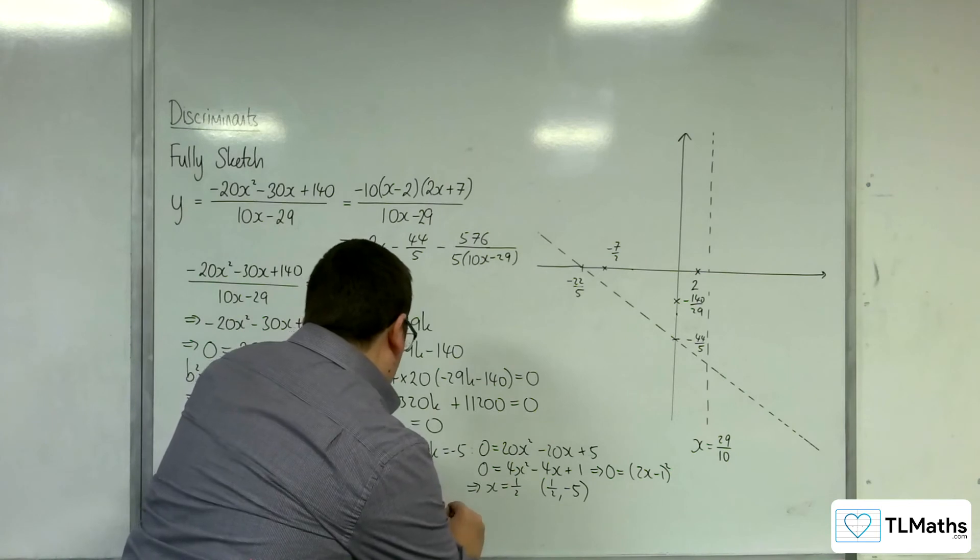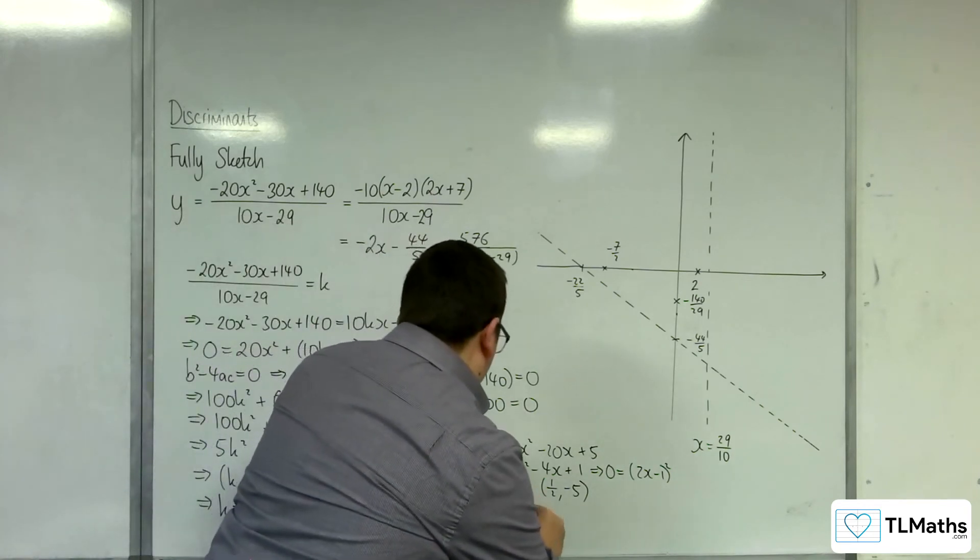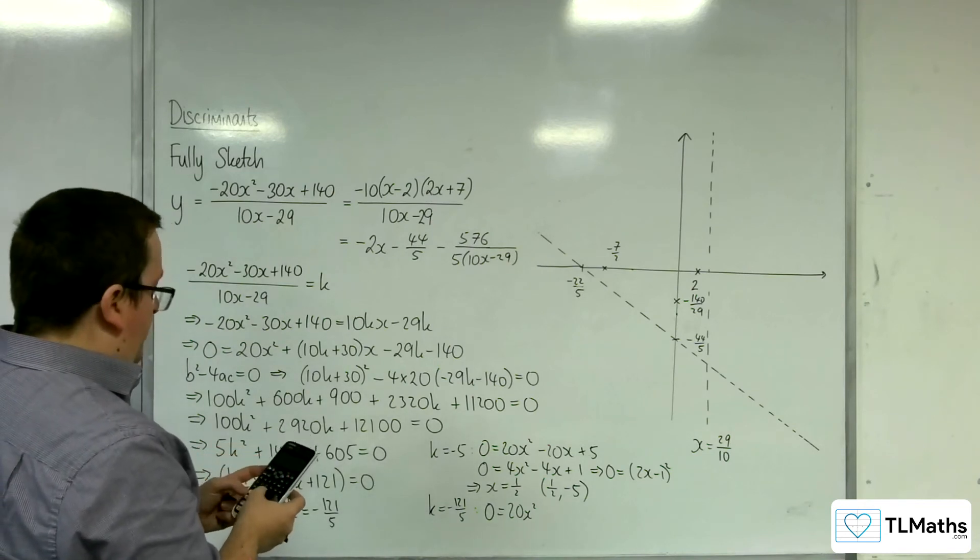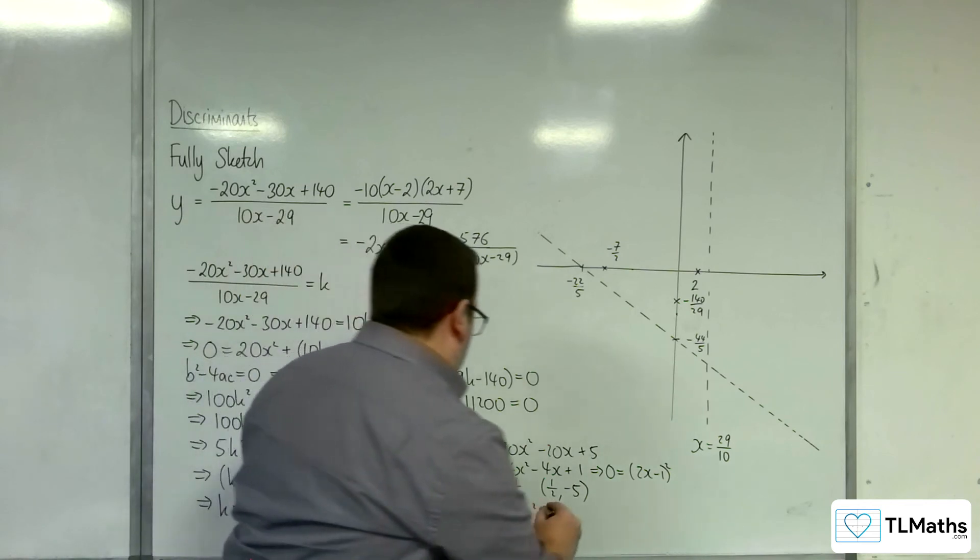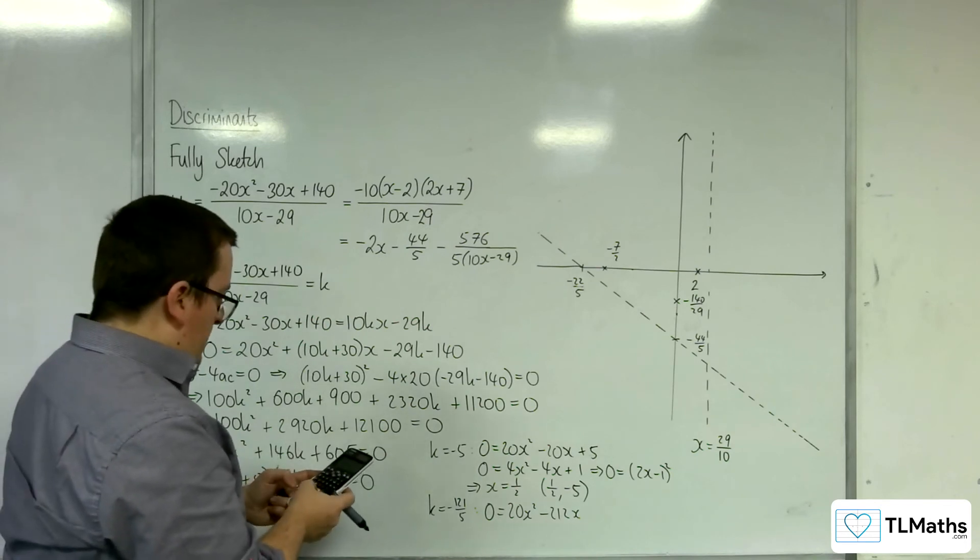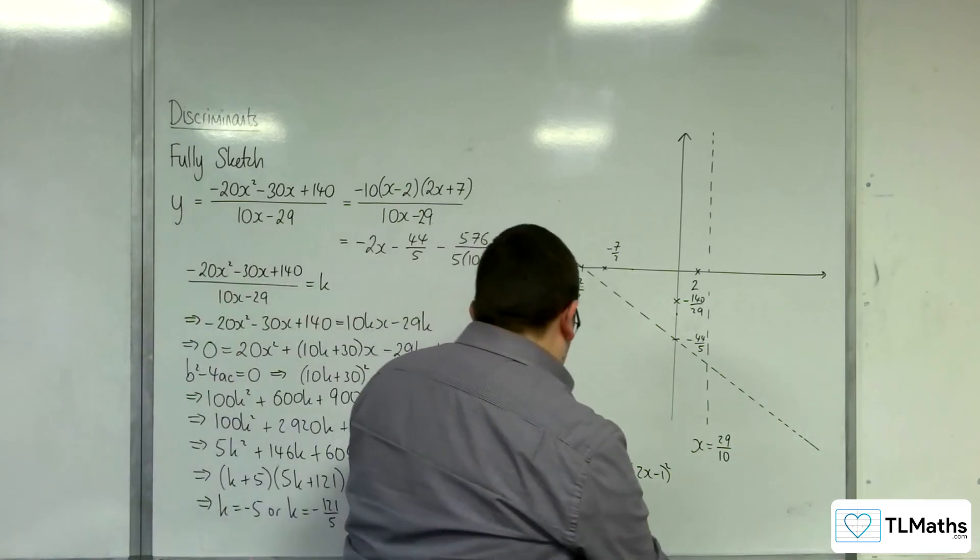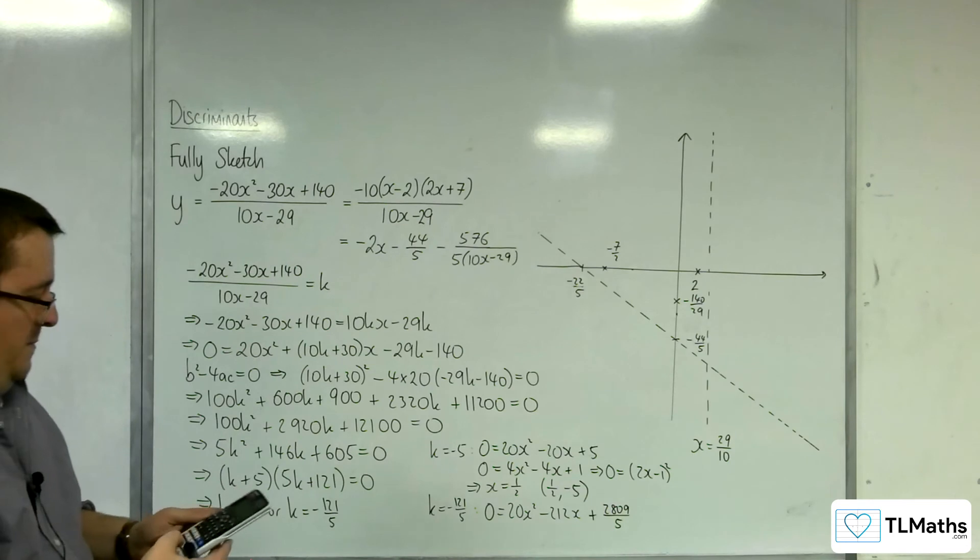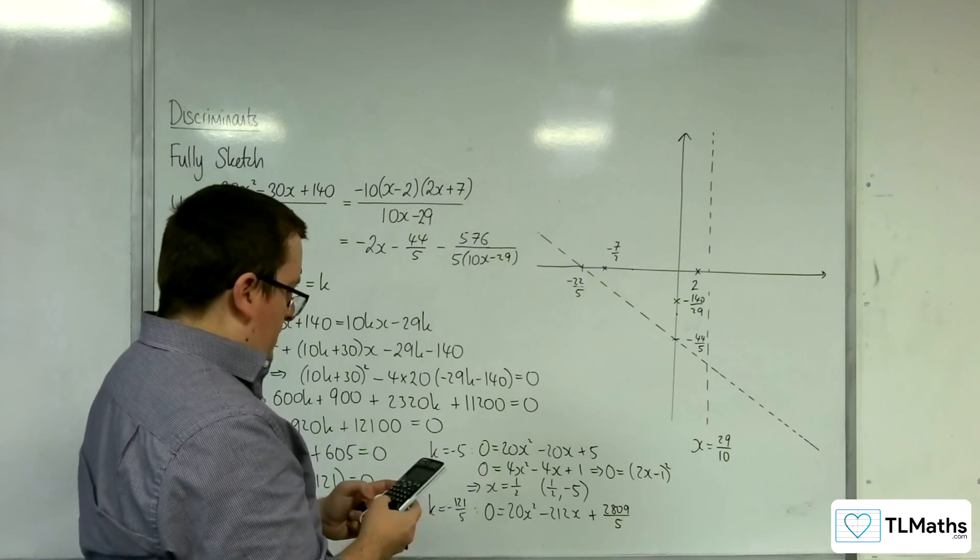Now the second stationary point. When k is equal to minus 121 over 5, we get 0 is equal to 20x squared. Then, 10 lots of minus 121 over 5, plus 30, is minus 212x. And then, minus 29 times minus 121 over 5, take away 140, so plus 2809 over 5. I'm going to pop that straight into my quadratic solver. 20 without trying to do anything to it. 2809 over 5.